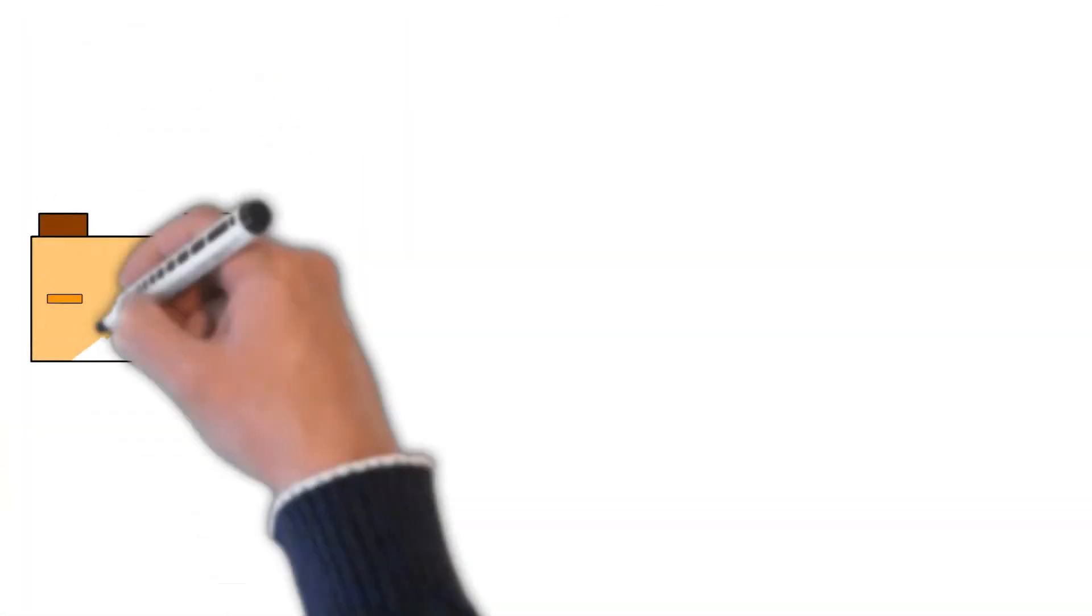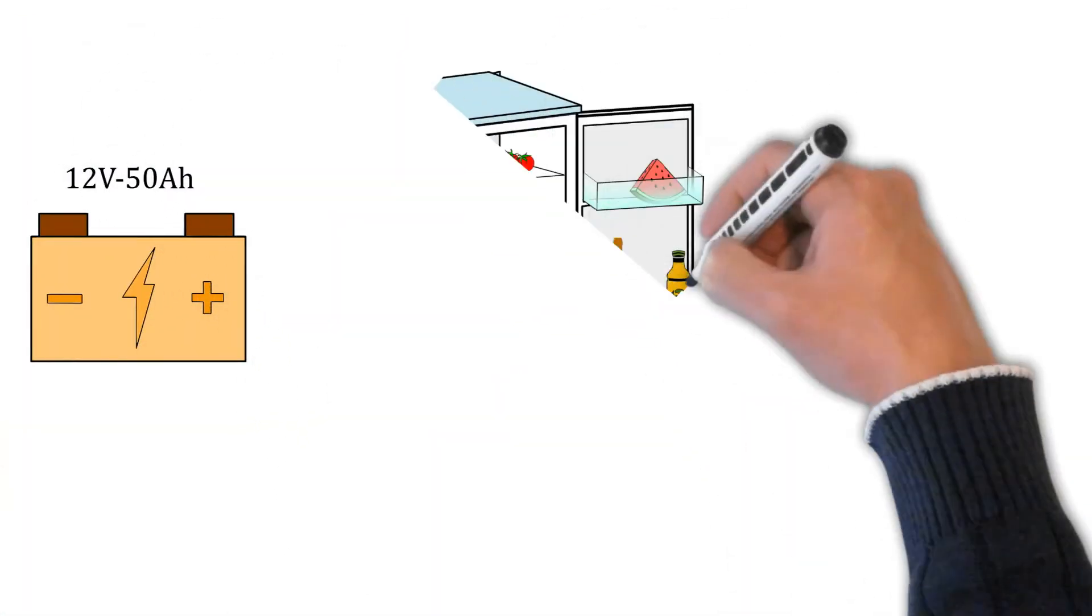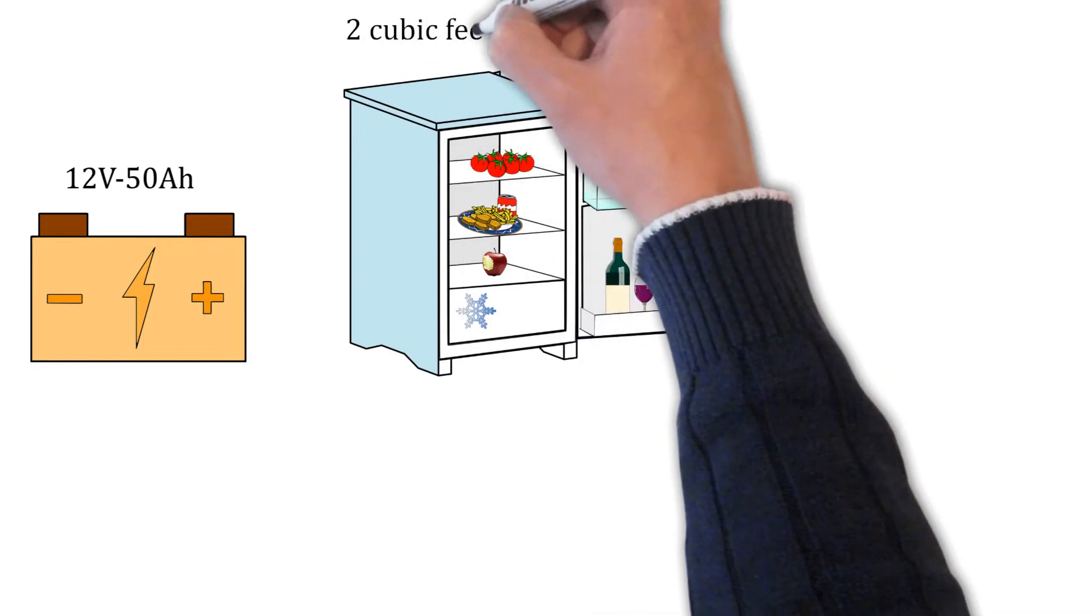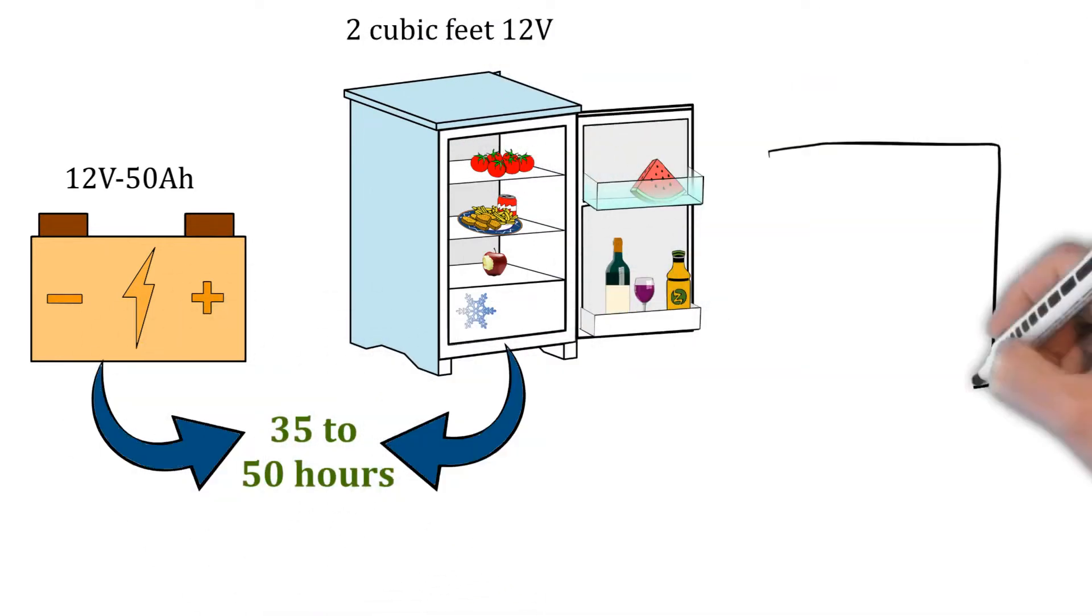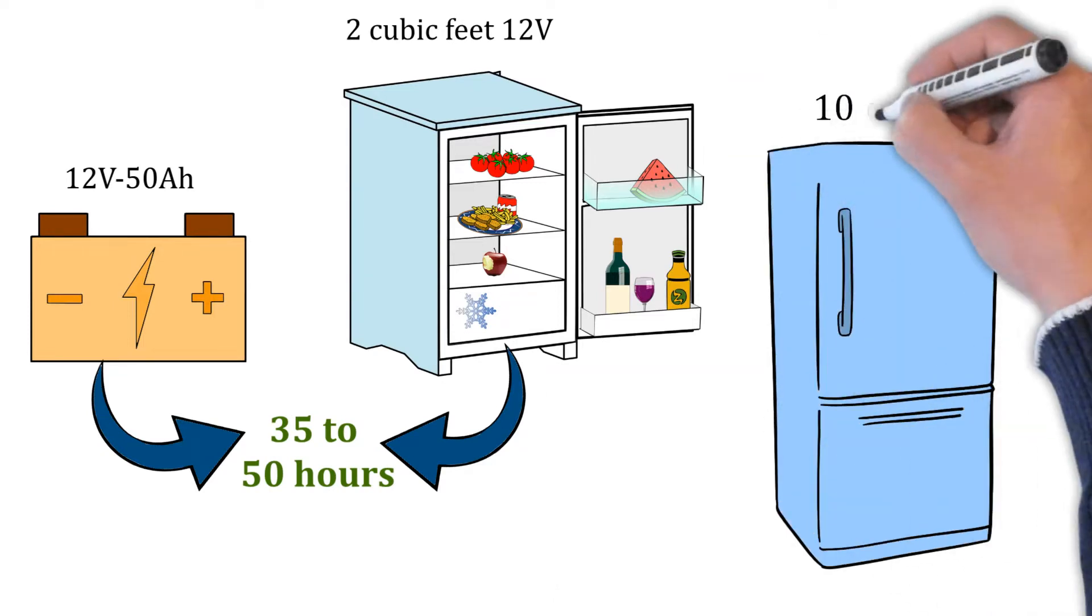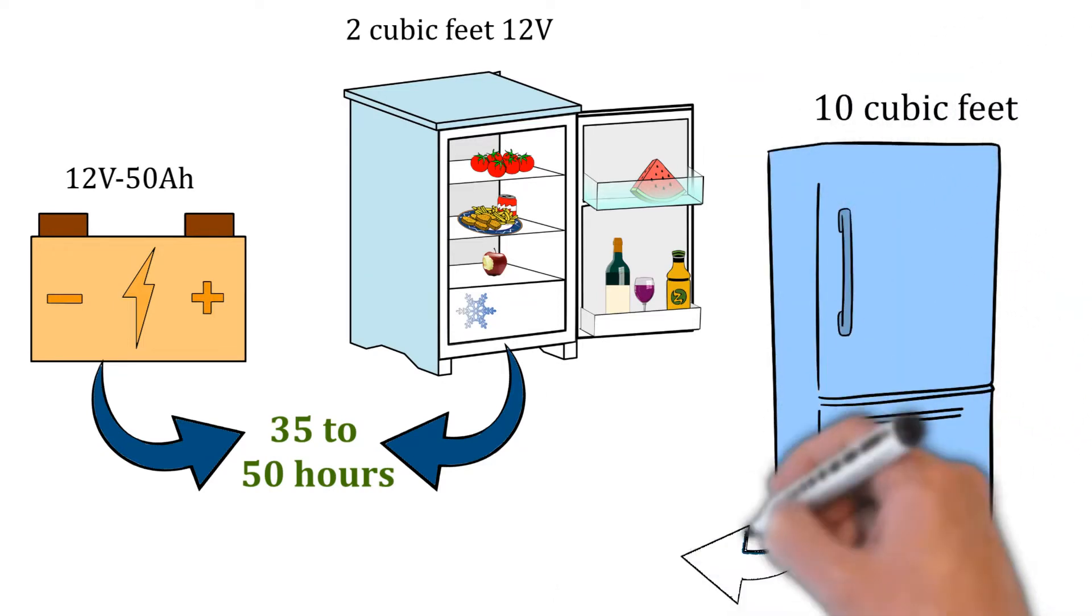In general, a 12V-50Ah battery can run a 2 cubic feet 12-volt fridge for 35 to 50 hours before it's completely depleted. A 10 cubic feet RV refrigerator can run on the same battery for only 10 to 15 hours.